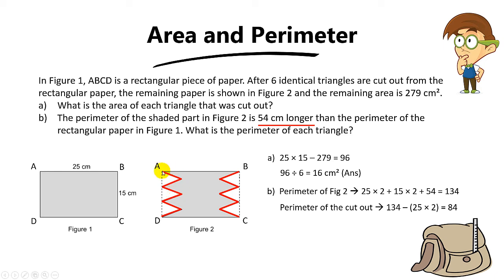So how do we find one set of red colored lines? Basically, we want to find the length of these two red colored lines. You basically take 84 divided by 6, because there are 6 triangles, you get 14 cm. So two of them add up to 14 cm.